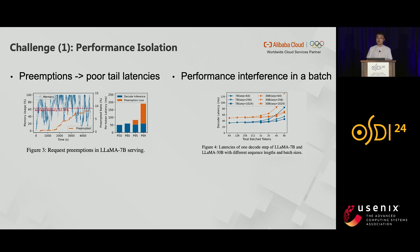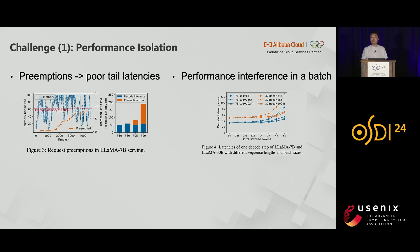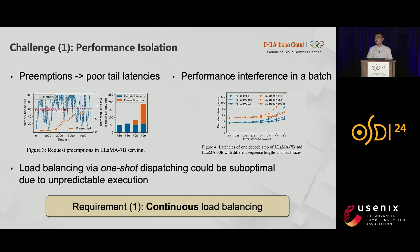These characteristics introduce a series of scheduling challenges that affect the performance and quality of LLM services. The first is performance isolation. Preemptions are inevitable when you use dynamic memory allocation, and they can cause poor tail latencies and SLO violations, because preempted requests will have to go through another round of queuing. Even without preemptions, requests in the batch have performance interference with each other. We need load balancing across instances to mitigate such issues, but load balancing via one-shot dispatching could be suboptimal because you cannot know the final output length in the beginning.